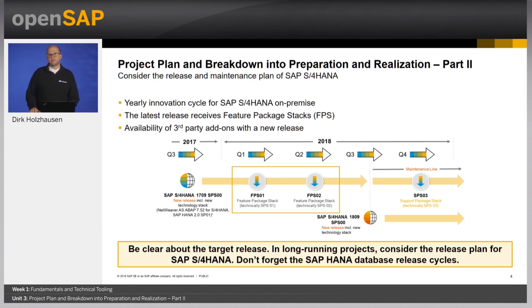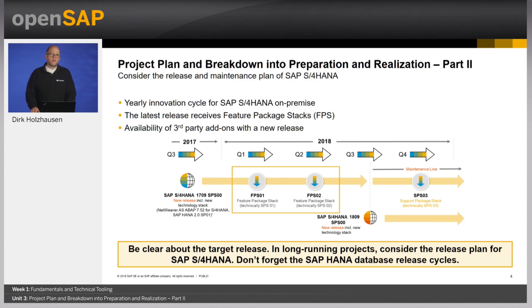S4HANA on-premise has yearly innovation cycles, meaning a new release is planned to be published once a year. At the time of this course, S4HANA 1709 with Feature Pack FPS2 is the current available release for on-premise, and in September a new release, S4HANA 1809, is planned to be released. These release cycles need to be considered in the project plan, specifically if you have a long-running project. It is recommended to clarify the S4HANA target release upfront that you are planning to go live with.